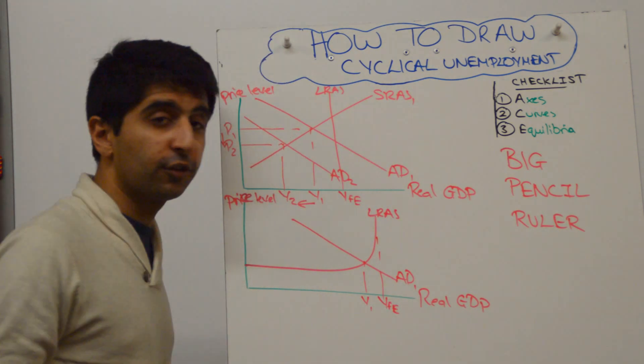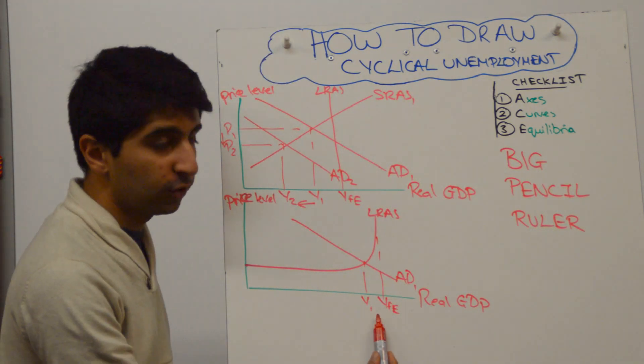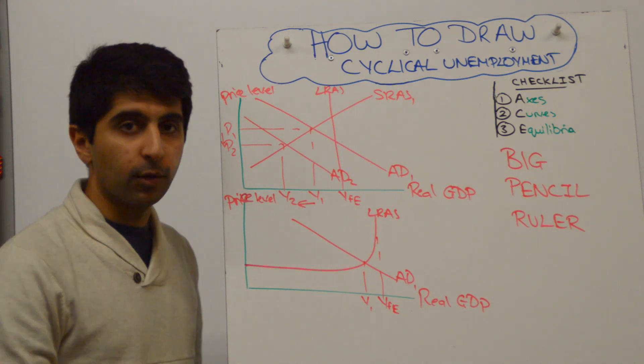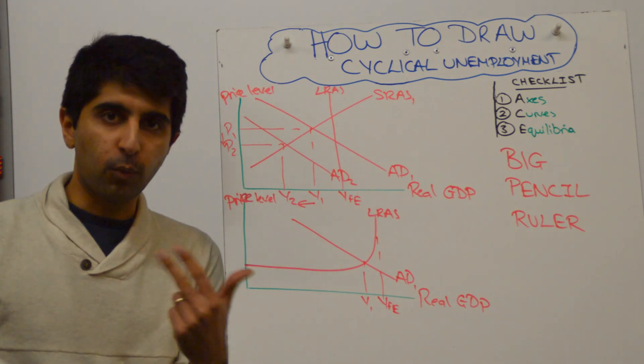Again, if you really wanted to, you could stop there because once again, you've shown your deflationary gap where there must be some cyclical unemployment. But if you wanted to just go one step further,